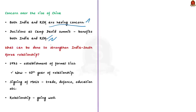Before ending our discussion, we will see the steps that can be taken to strengthen the relationship between India and South Korea. India and South Korea established their formal ties in 1973 — it has been 50 years since then, and both countries are commemorating the 50th year of their relationship. India and South Korea have signed several MOUs related to trade, defence, education and so on, and the relationship between the two countries is going well. But there are still some areas where these two countries need to focus to strengthen their relationship.